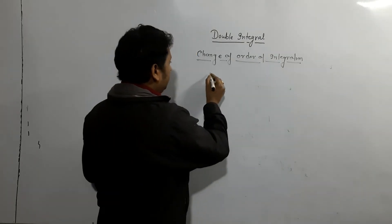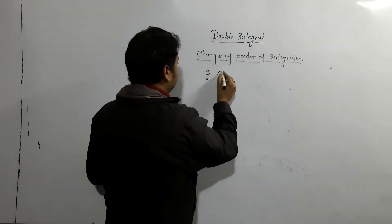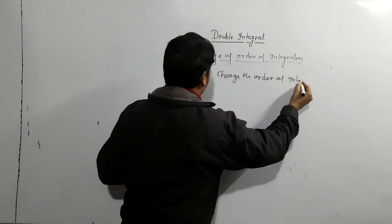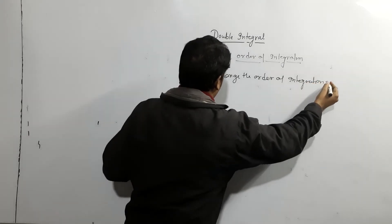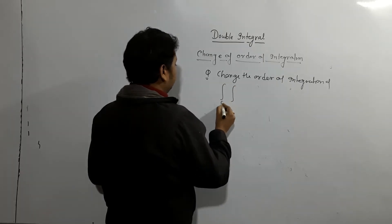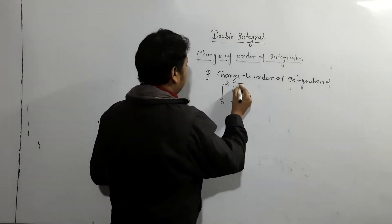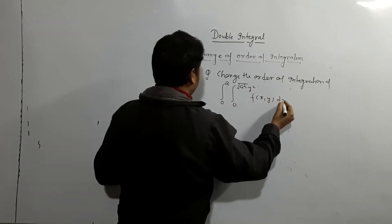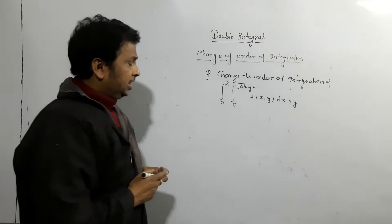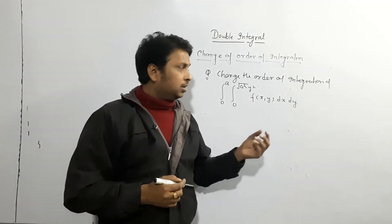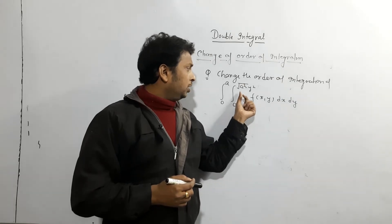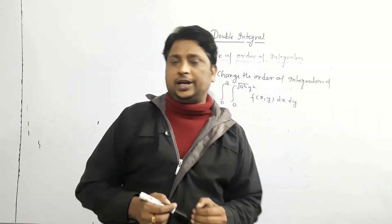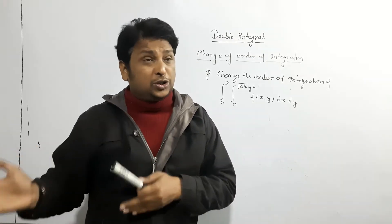I will take one question: change the order of integration. Suppose we have this question — some function is given with dx dy, integration limits 0 to √(a²−y²) and 0 to a. The question is to change the order of integration, so first we have to think about in which order it is currently given.